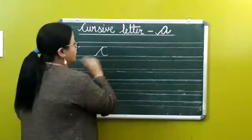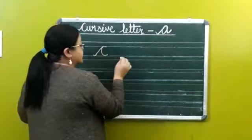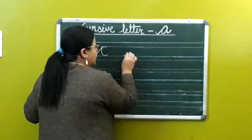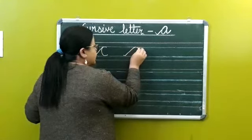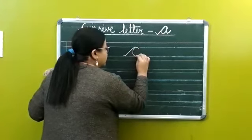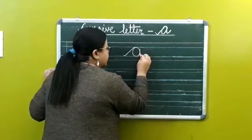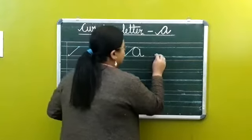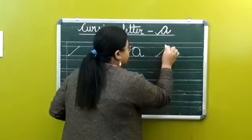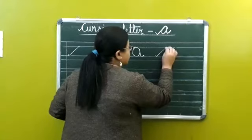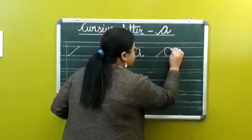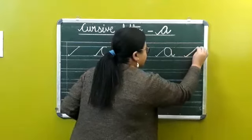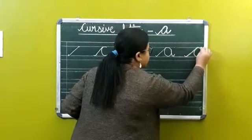Now we will write letter A joining these patterns. Make a dot here, go up, first pattern, second pattern, then join a line here, come down and small tail. Same way, go up, make a curve, join a line here, come down and a tail. Up, make a C, join line here and a tail.